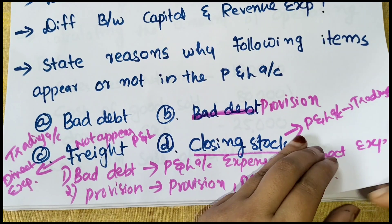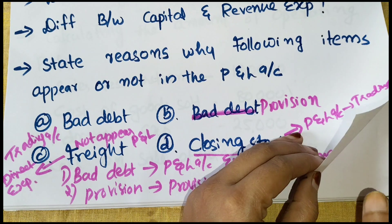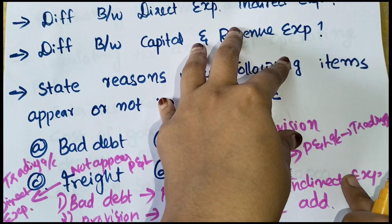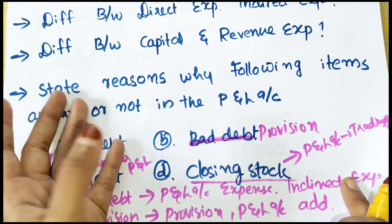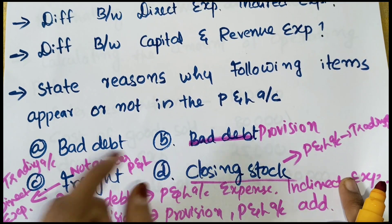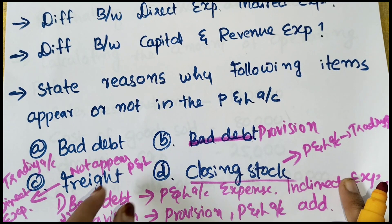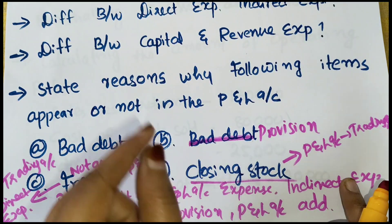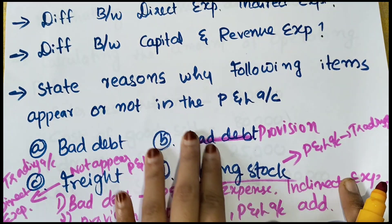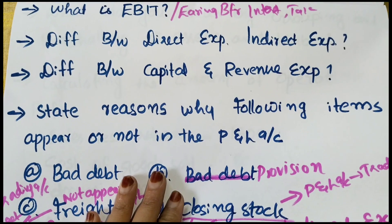When preparing financial statements — Trading account, P&L account, and Balance Sheet — each item goes to the appropriate statement. For example, furniture and buildings are assets and do not appear in P&L; they appear on the asset side of the Balance Sheet.